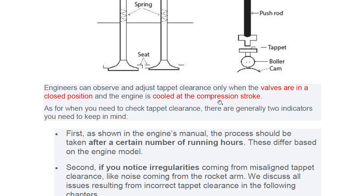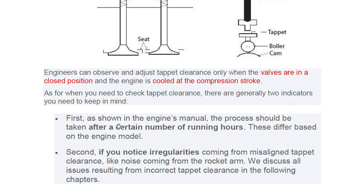Engineers can observe and adjust tappet clearance only when the valves are in closed position. The three conditions when you check tappet clearance are: the valve must be in the closed position, the engine must be cooled, and it must be at the compression stroke. Generally, you check tappet clearance after a certain number of running hours as shown in the engine's manual, or if you notice irregularities such as noise coming from the rocker arm due to misaligned tappet clearance.